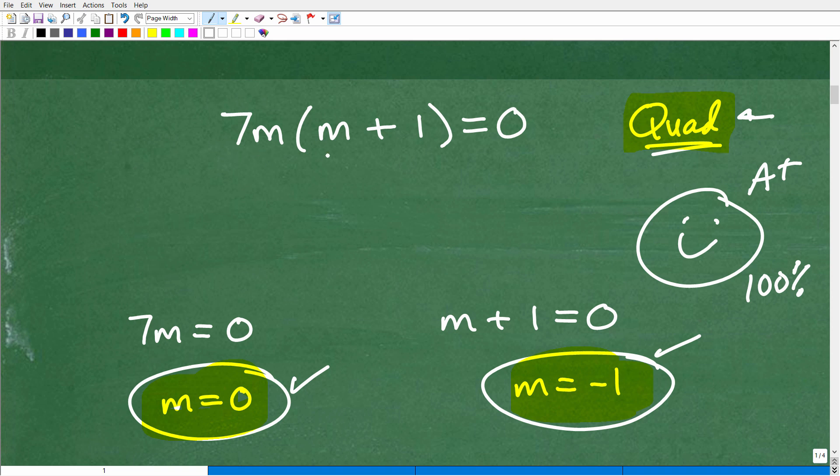Now, here I have 7M times M plus one. Now, if you started the problem this way and you multiplied in and you went 7M squared plus 7M is equal to zero, that right there, that step might have indicated to you, oh, this is a quadratic equation because I see a variable squared.